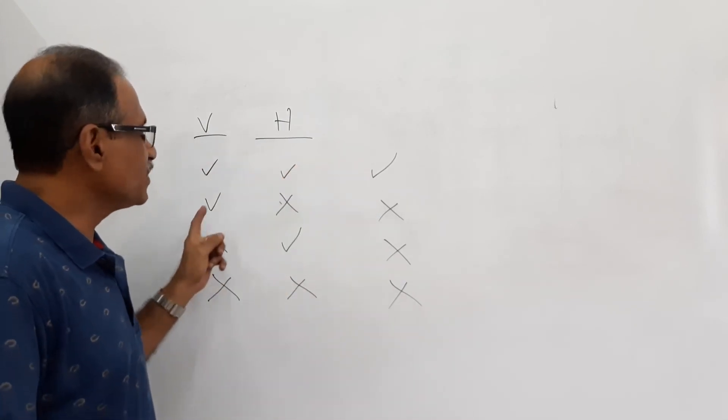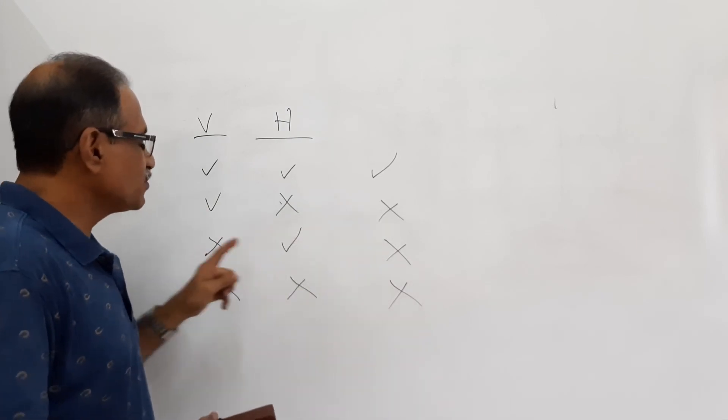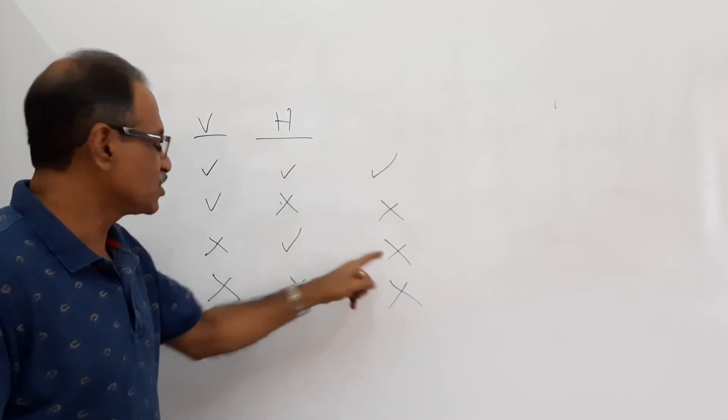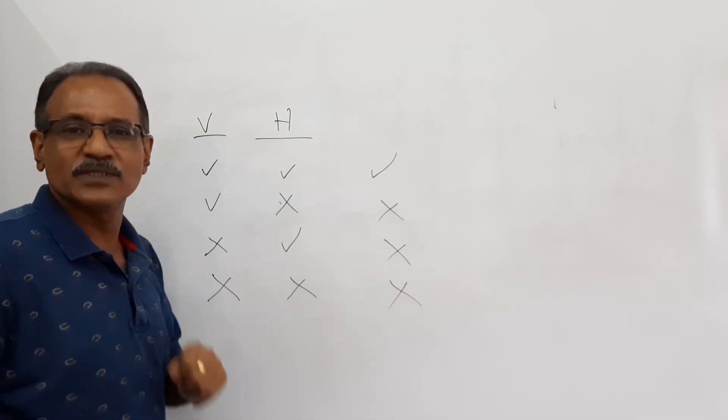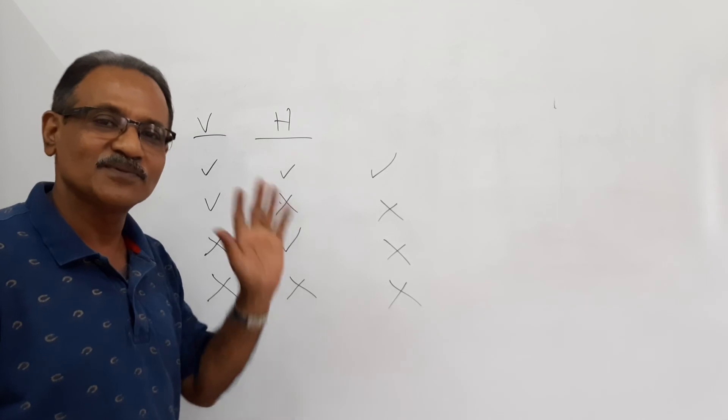To summarize: visible plus visible gives visible. Visible plus invisible gives invisible. Invisible plus invisible gives invisible. That's all.